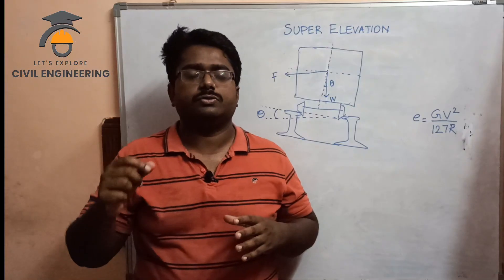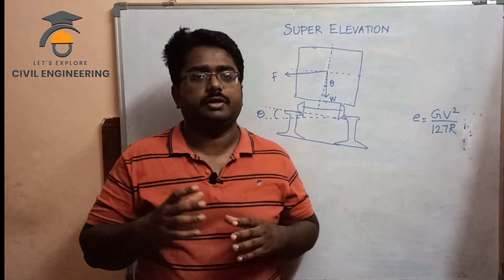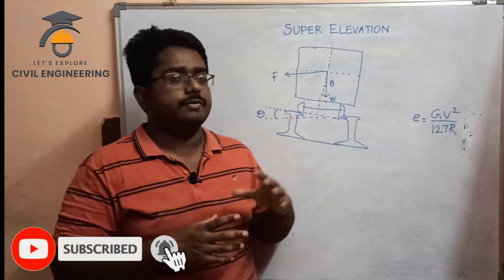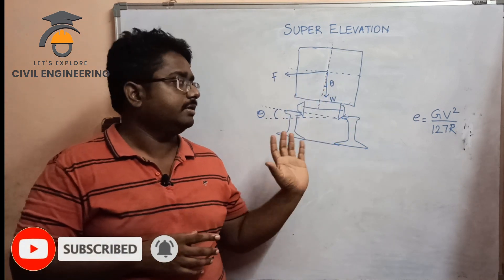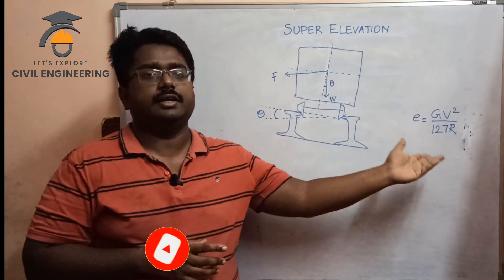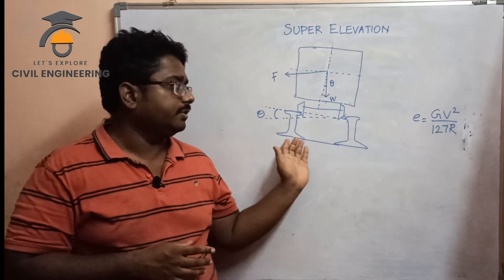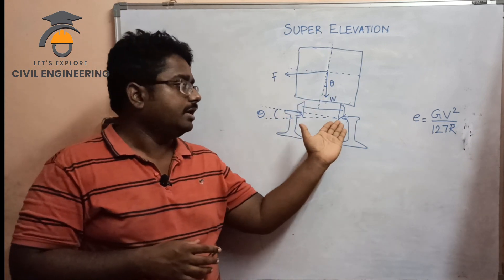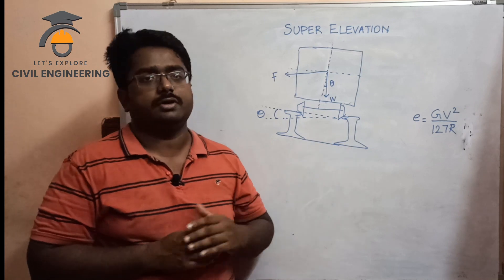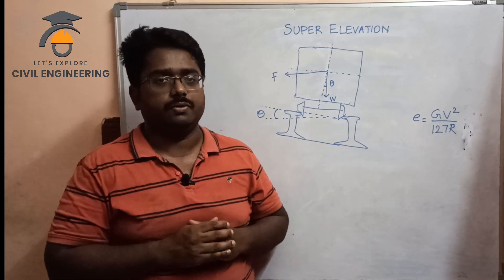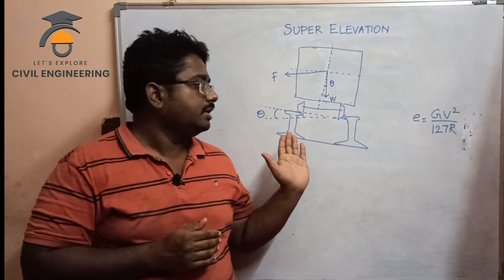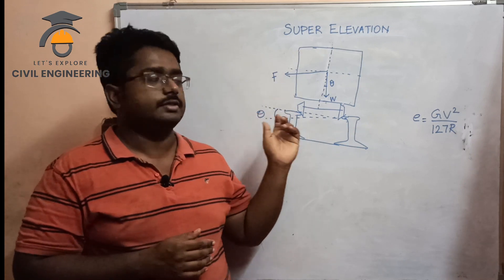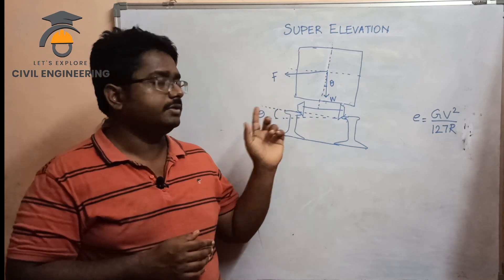If you look at the right side of the track cross-section, the height on the outer edge is increased. This is how super elevation is provided.